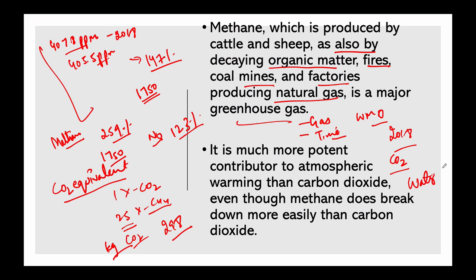Water vapor is not considered a cause of man-made global warming because it does not persist in the atmosphere for more than a few days. There are other greenhouse gases which have far greater global warming potential but are much less prevalent, such as sulfur hexafluoride (SF6), hydrofluorocarbons (HFCs), and perfluorocarbons (PFCs). These have been commonly used as refrigerants and fire suppressants. Many of these compounds also have a depleting effect on ozone in the upper atmosphere.